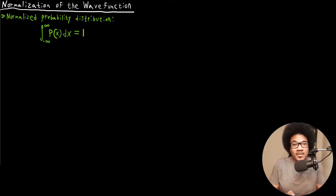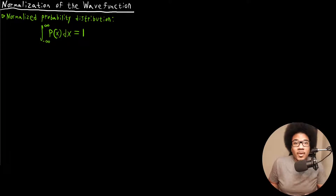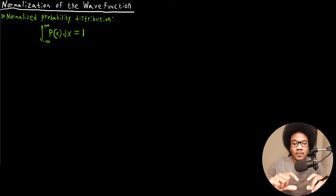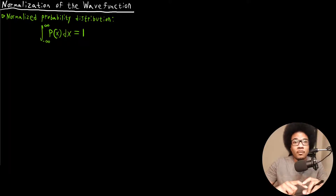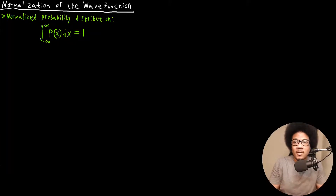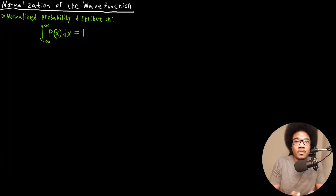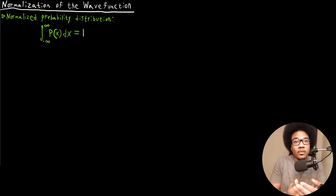In this video, we're going to discuss the normalization of the wave function. In previous videos, we've talked about the Born interpretation of the wave function and how we interpret a wave function through this lens of probability. We can build up a probability density and talk about the location of a particle as far as its probability of being in a certain region of space.